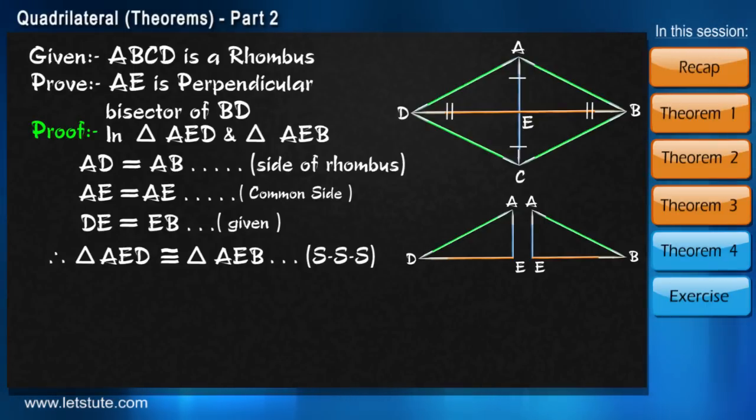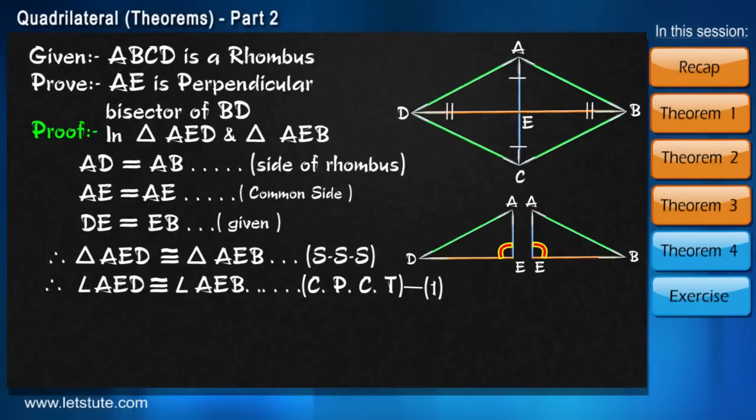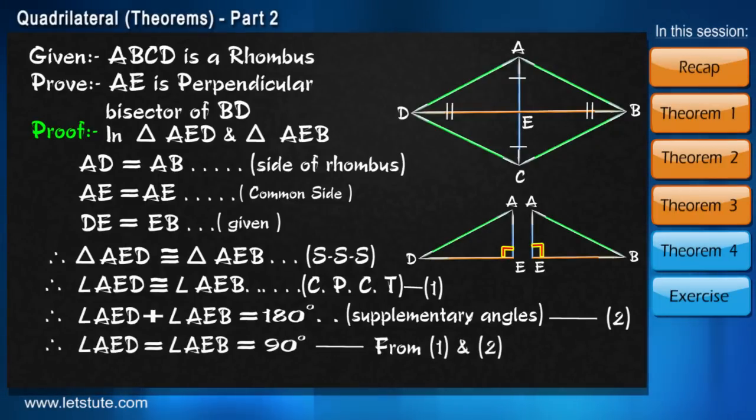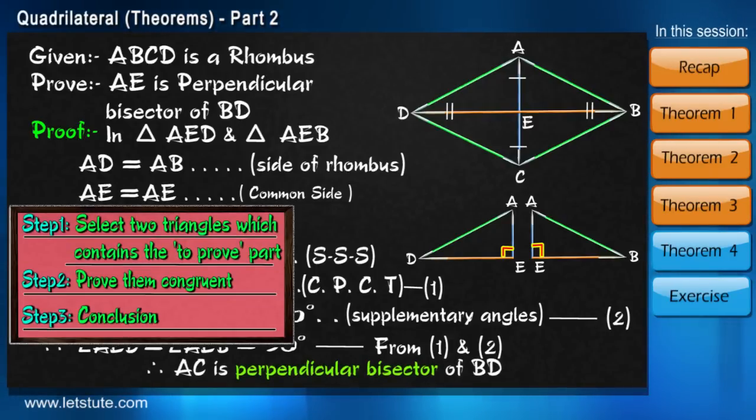Now the conclusion part. Angles of these two congruent triangles will also be equal. And their addition must be 180 degrees because they are supplementary angles. Which means each angle is of 90 degrees. So it is not only bisector but a perpendicular bisector.